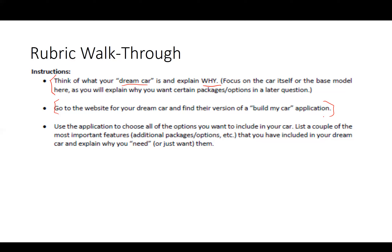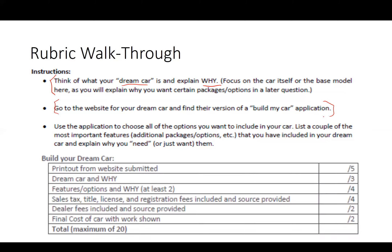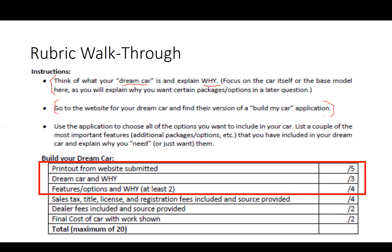You're going to use the Build My Car application to choose all the options you want. List a couple of the most important features you've included and explain why you want them. This is on the rubric — you need to cover your dream car and why, plus the features and options and why.